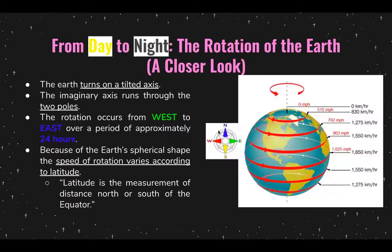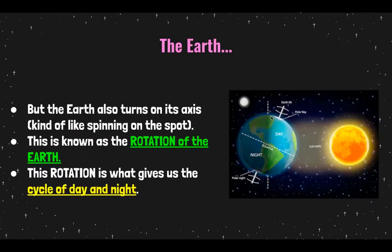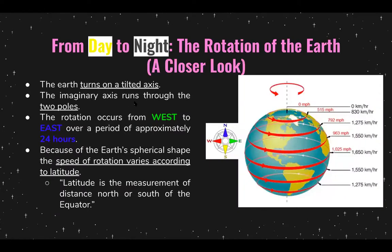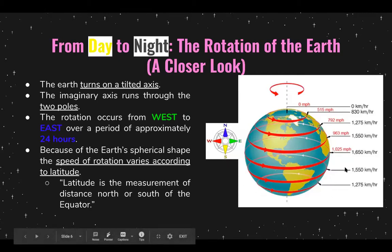Let's take a closer look at the rotation of the Earth. The Earth turns on a tilted axis — we can see the north and south pole, but it's tilted. The imaginary axis runs through the two poles. The rotation occurs from west to east over a period of approximately 24 hours, which is why we say one day is 24 hours.